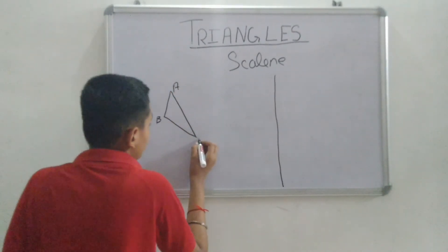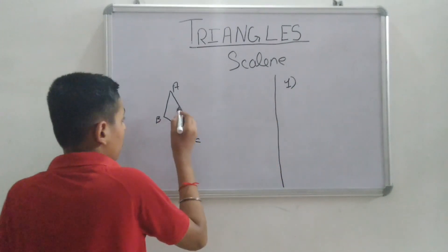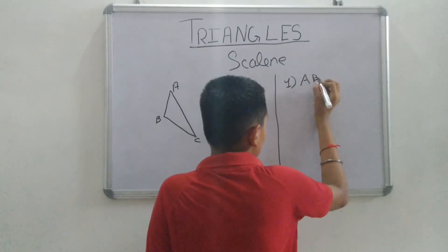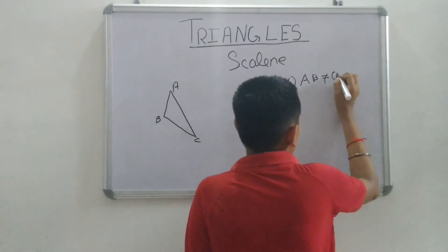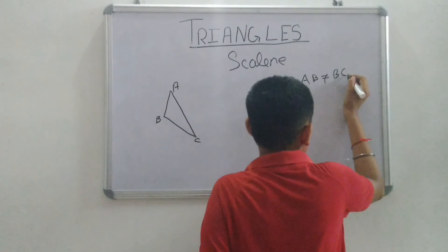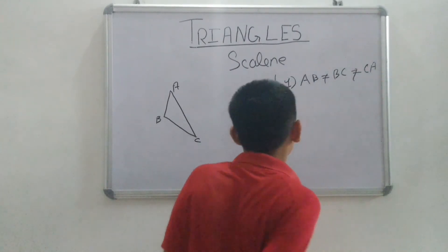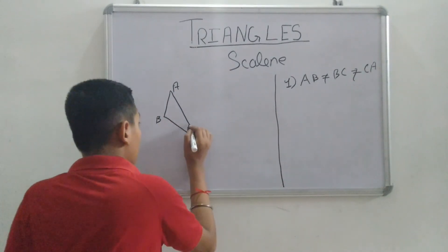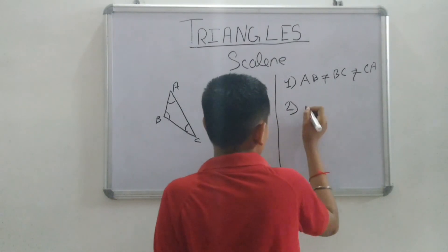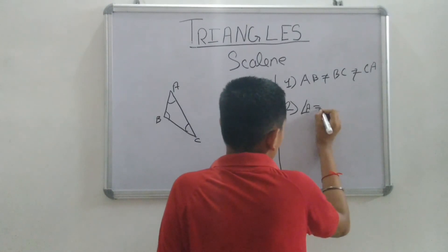This is a scalene triangle with points A, B, and C. First property: all the sides are different — AB is not equal to BC, and BC is not equal to CA. Second property: all the angles are different.